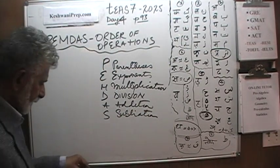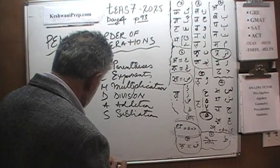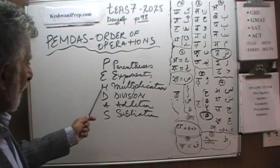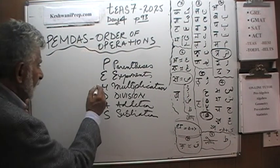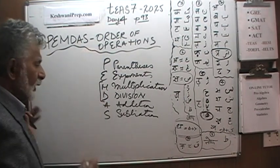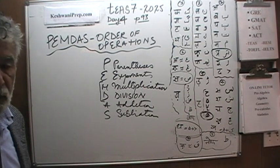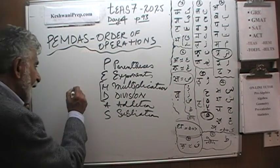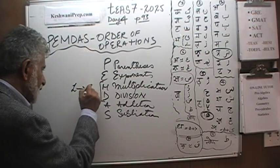So here is what is going on. This is the order in which we do it. However, these two operations, Multiplication and Division, they both have the same priority. Which one do we do first then, if they both have the same priority? The rule is that we simply go from left to right. Whichever comes first.